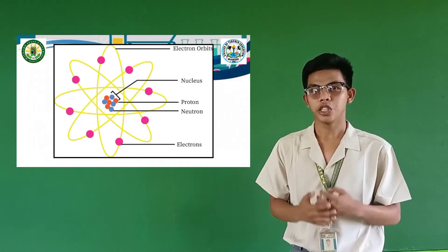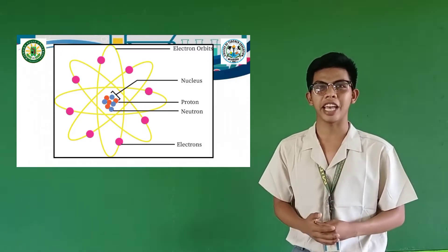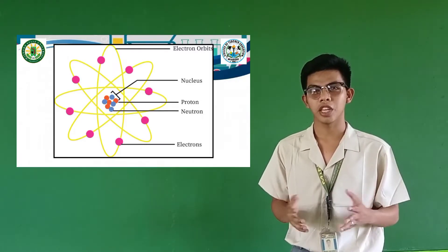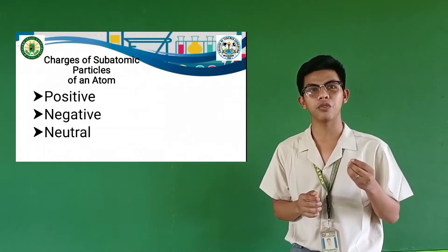Let's go back to our activity earlier. You said that when you rub the balloon, it pulls the can. But why? Earlier, we defined matter as anything that occupies space. We also said that matter is different in terms of their atoms — meaning every matter has an atom. A balloon is a type of matter, so a balloon has an atom. Inside an atom is a nucleus containing proton and neutron, and outside the nucleus is the electron. And these subatomic particles have different charges.